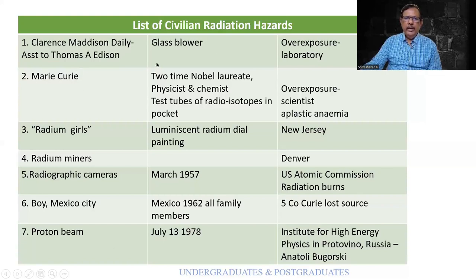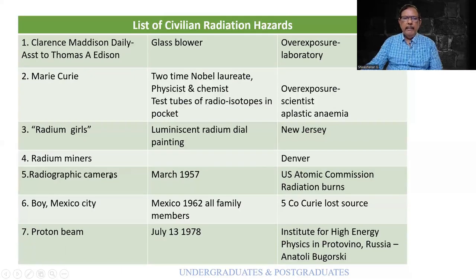Marie Curie, already mentioned, suffered overexposure as a result of which she developed aplastic anemia. The Radium Girls — I shall show you the picture subsequently. The mining industry also: radium and uranium are found in the Earth's crust. Robbins very beautifully explains both chemical carcinogenesis as well as radiation in general.